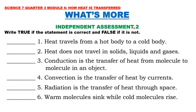Independent Assessment 2. Write true if the statement is correct and false if it is not. Number 1: Heat travels from a hot body to a cold body. 2: Heat does not travel in solids, liquids, and gases. 3: Conduction is the transfer of heat from molecule to molecule in an object. 4: Convection is the transfer of heat by currents. 5: Radiation is the transfer of heat through space. 6: Warm molecules sink while cold molecules rise.